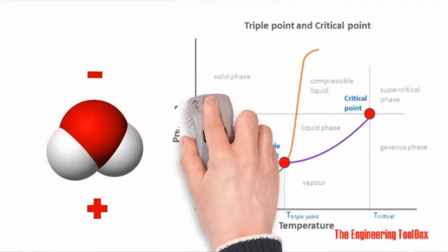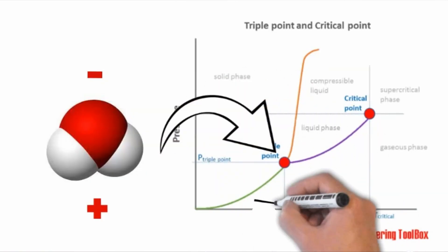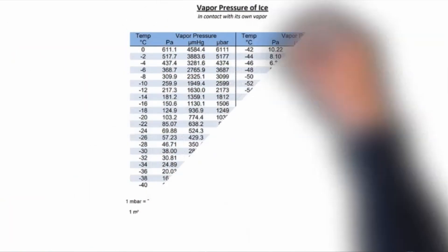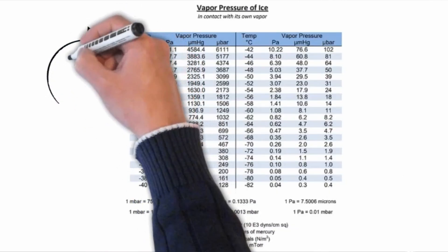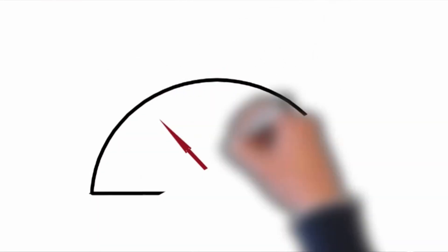Meltback is where you have densification, shriveling, maybe some discoloring — you always want to stay away from that. If you don't know what the meltback point is, it's just the triple point: 4,584 millitorr, which is about the same as six millibar. But that's the actual pressure at your product where sublimation is taking place, and that's going to be higher than what your gauge is measuring.